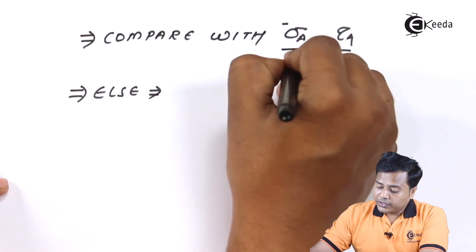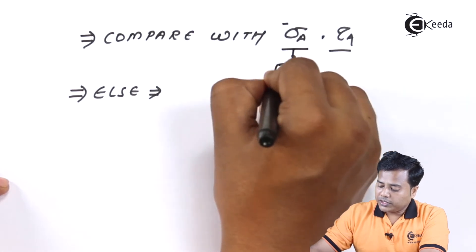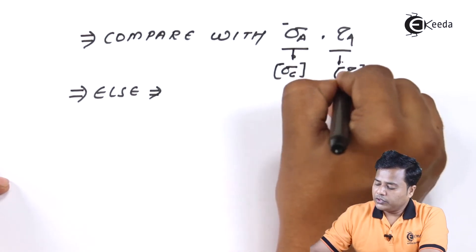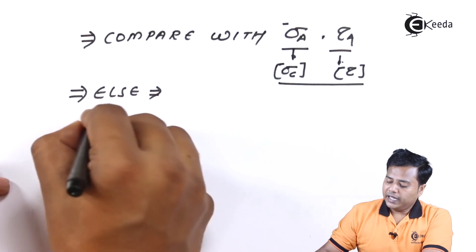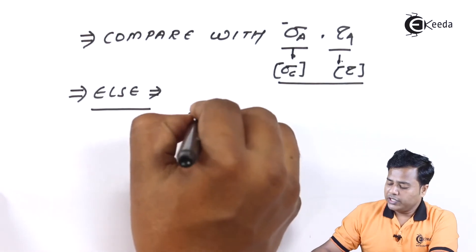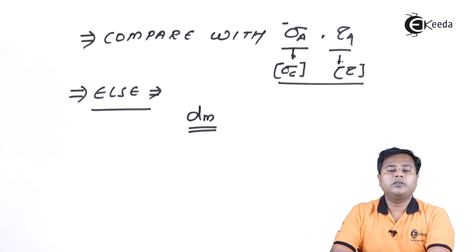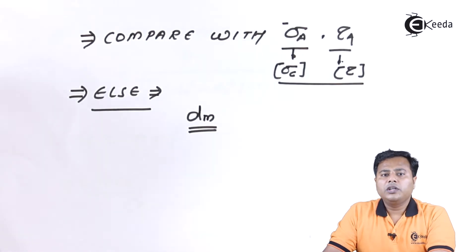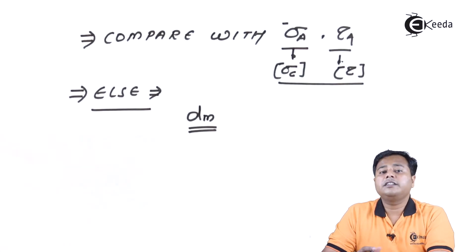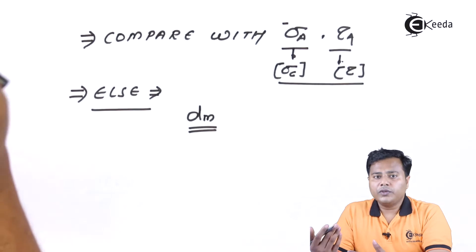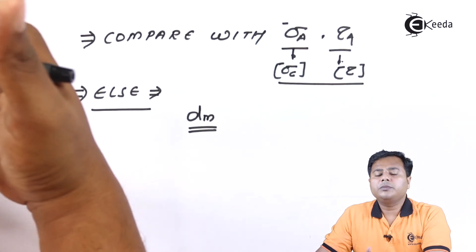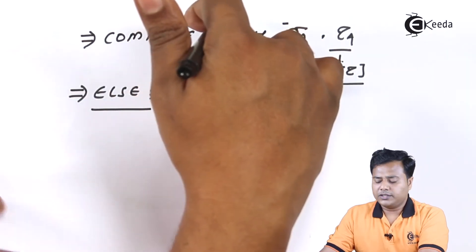Once these values are found, we compare them with the allowable values using the notation sigma_c allowable and tau allowable, which come from material selection. If they are not safe, we go back and change d_mean — the mean of outer and inner diameter — changing the standard selection to the next value, then verify again. It is a trial and error method, but in most cases we will get the safe value.